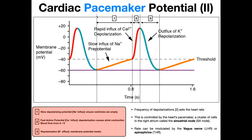When most people start talking about this, they start talking about it at this first dotted line — that's really where the cycle begins. I'm actually going to go a little bit further back, because I feel like it's going to help to understand what's called the prepotential if we understand what happened in the previous cycle. It's somewhat similar to what we see in skeletal muscle.